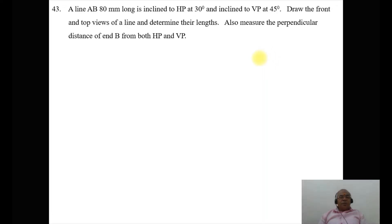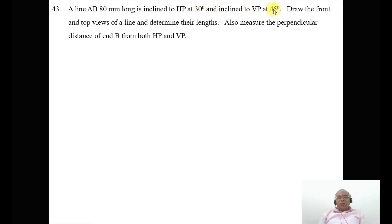In this video, we are going to take up one more problem on the projections of lines. The problem is problem number 43. A line AB is inclined to HP at 30 degrees and inclined to VP at 45 degrees. Draw the front and top views of the line and determine their lengths. Also, measure the perpendicular distance of point B from both HP and VP.